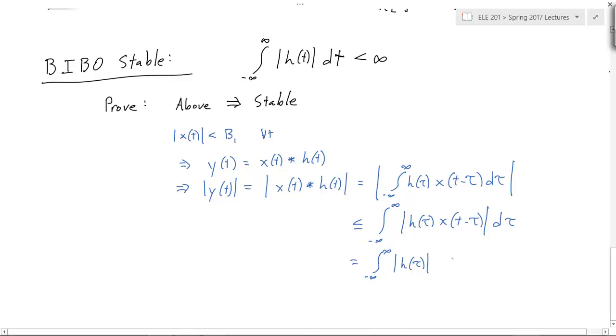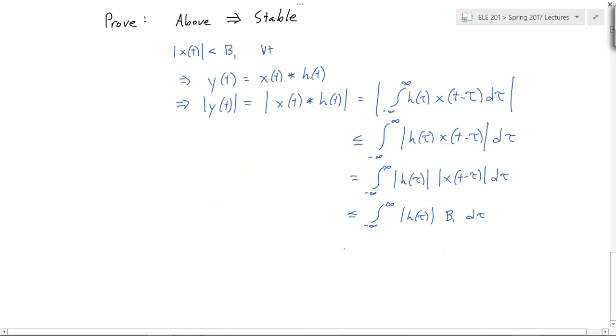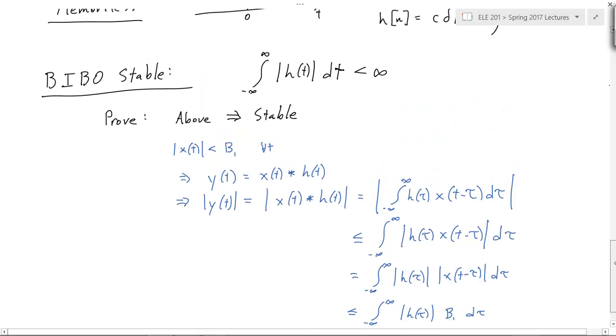And finally, we know that x is bounded. So, the second absolute value here is less than B1. Bring the B1 out, and we get the whole thing is less than B1 times this integral, which happened to be our condition. Our condition was that the second thing was finite. So, there you go. B2, just define this thing as B2. And it's less than B2. So, that worked.